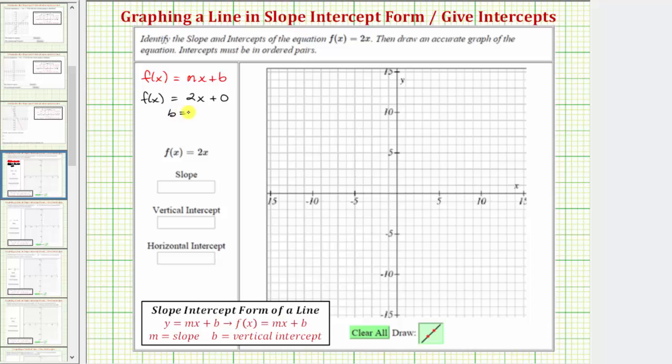Because b equals zero, we know the vertical intercept is zero, and because m equals two, we know the slope is equal to two. So let's go ahead and enter the slope is equal to two.